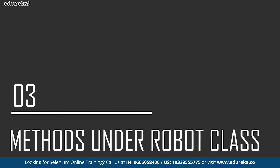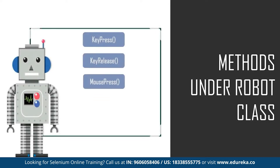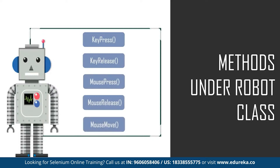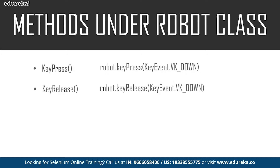Now let's move on to the different methods used while working with this Robot class. There are basically five different methods. As mentioned earlier, it handles all keyboard and mouse functions. The first method is keyPress, which is used to press any key on the keyboard. For example, a particular command will press the up key on the keyboard. Next, we have the keyRelease method, which is used to release a pressed key on the keyboard. For example, a command will release the pressed Caps Lock key.